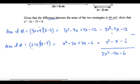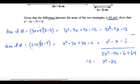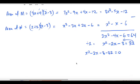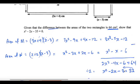The difference of the two areas equals 64. A lot of things are divisible by 2 here, so dividing by 2 gives x squared minus 2x minus 3 equals 32. Taking the 32 across: x squared minus 2x minus 3 minus 32 equals 0. Therefore, x squared minus 2x minus 35 equals 0, which is the proof.